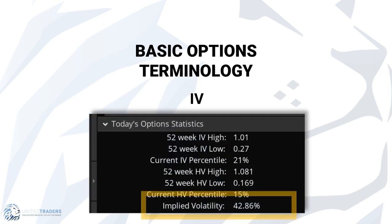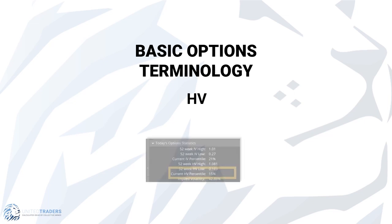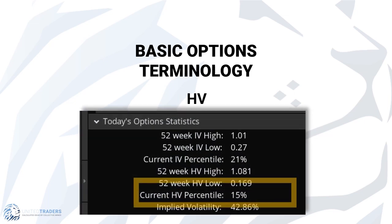Implied Volatility, or IV, is a metric that captures the likelihood of a change in the underlying security's price. IV measures the expected future move. High volatility stocks are expected to move more than a low volatility stock. Historical Volatility, or HV, is a statistical measure of the dispersion of returns for a given security or market index over a given period of time. Historical volatility over a trading period, like 30 or 90 days, is what the one standard deviation move would be on an annualized basis. Historical volatility is based on previous results, compared to IV being forward-looking.